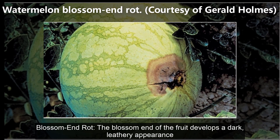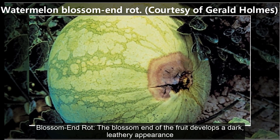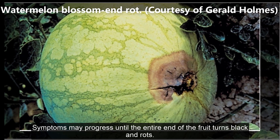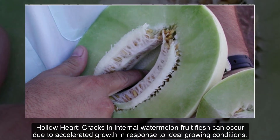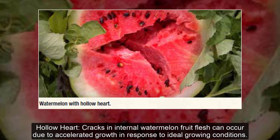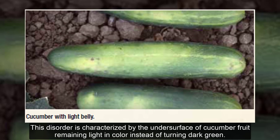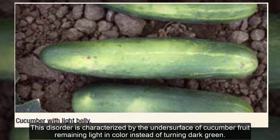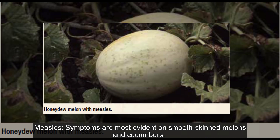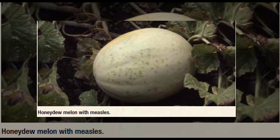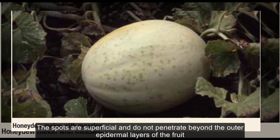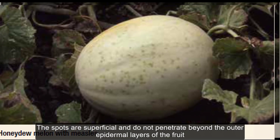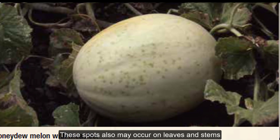Adverse environmental conditions symptoms: blossom end rot — the blossom end of the fruit develops a dark, leathery appearance; symptoms may progress until the entire end turns black and rots. Hollow heart — cracks in internal watermelon fruit flesh can occur due to accelerated growth in response to ideal growing conditions. Light belly color — the undersurface of cucumber fruit remains light in color instead of turning dark green. Measles — small brown spots scattered over the surface of smooth-skinned melons and cucumbers; spots are superficial and do not penetrate beyond the outer epidermal layers; spots may also occur on leaves and stems.